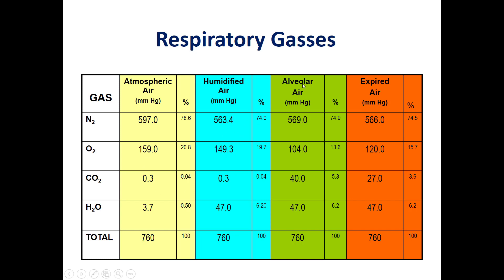The atmospheric air will first be humidified. At the alveoli level, we have the gas exchange where CO2 will be removed and oxygen will enter our bloodstream. Then the gas will be expired.